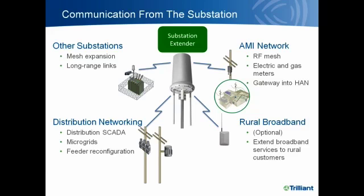That same substation extender also provides the ability to communicate from the substation outward. It can provide links out to other substations — one of the main benefits of a mesh — linking substations together in a daisy-chain fashion. With long-range links that can go up to 10 miles, you can extend this into rural areas and reach substations that may never have had communications before. That same extender also provides the bridge into the AMI network.